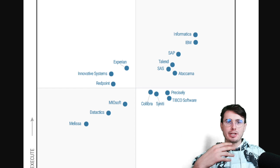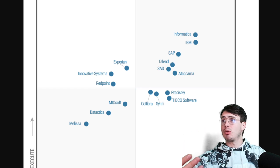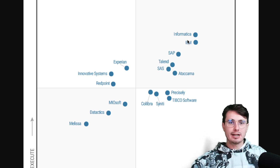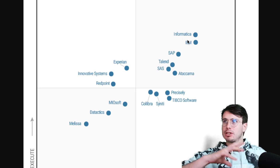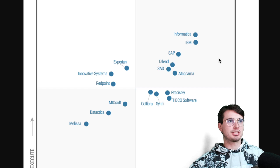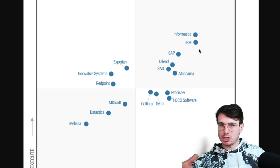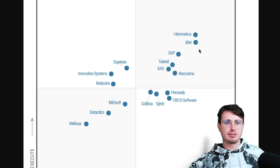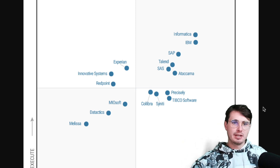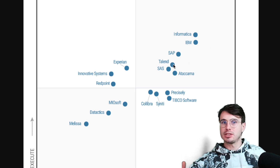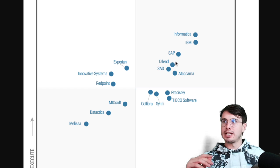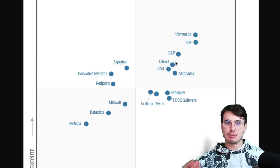Now let's talk about some solutions you might want to use to implement a data quality check. First, you have legacy providers like Informatica and IBM, where you have a full interface that you install on top of your data to run these data quality checks. You pass your data through the systems to explicitly check for errors, making sure your data is accurate, consistent, and actionable. You also have Talend, a relatively newer entrant, which has a really robust data integration and data quality platform with a big suite of tools to clean, standardize, and enrich your data.